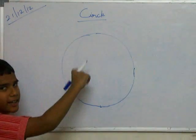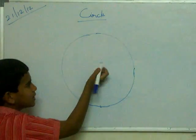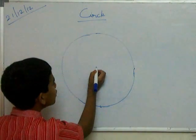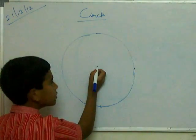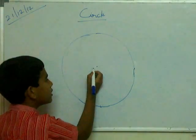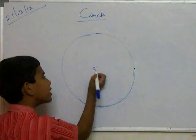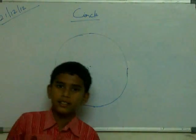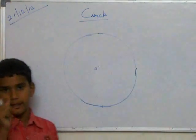This is the circle. In the center of the circle we should put O — a dot. O is known as the center of the circle.